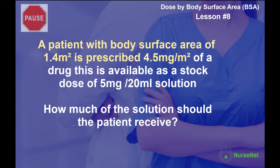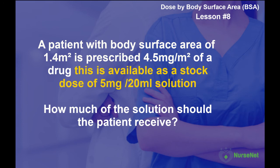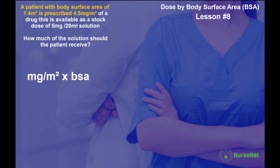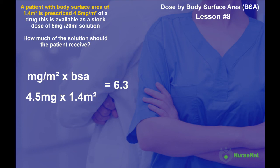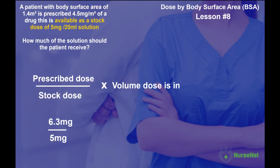Breaking this question down into two parts. Part one: to work out what the prescribed dose of the drug should be. And part two: how much of the solution should be given to the patient. Using our calculation — dose multiplied by the patient's body surface area — that's 4.5 milligrams multiplied by 1.4 meter squared, giving us 6.3 milligrams prescribed dose. Inputting that into our drug calculation formula: 6.3 milligrams divided by 5 milligrams stock dose gives us 1.26, multiplied by 20 milliliters of solution, giving a total of 25.2 milliliters of solution.